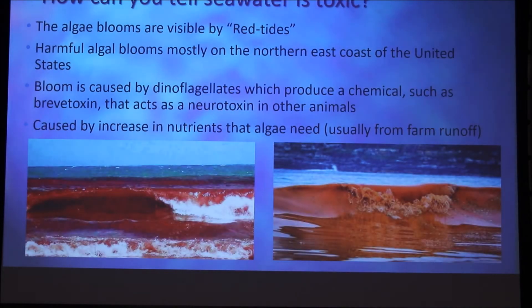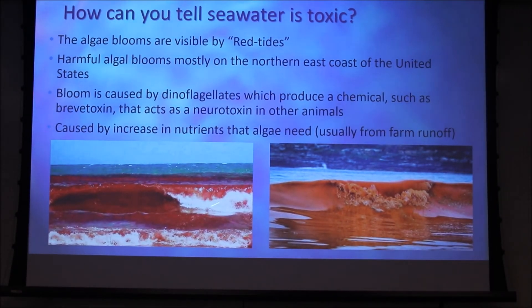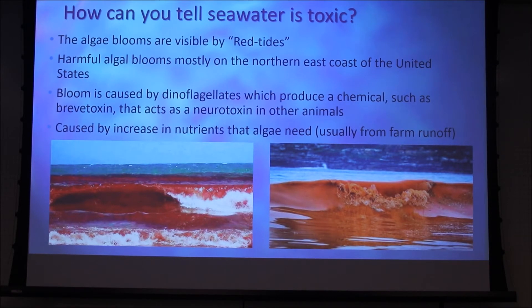How can you tell if the seawater is affected by these algae blooms? They are called red tides. As you can see in the waters here, it creates a red or orange pigment. These harmful algae blooms are mostly on the northeastern coast of the United States. However, recently they have been found in upwards of Canada, Florida, and on the southern coast of California.